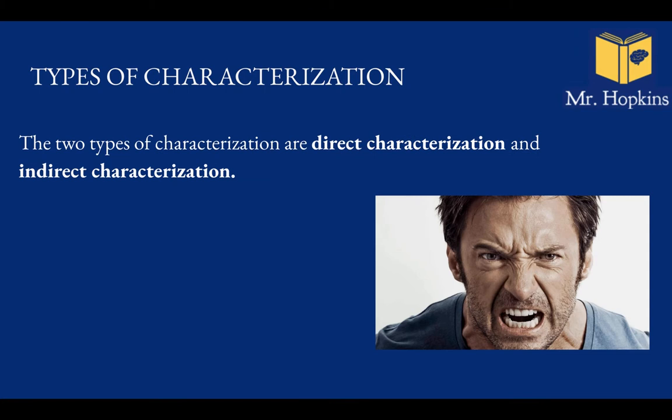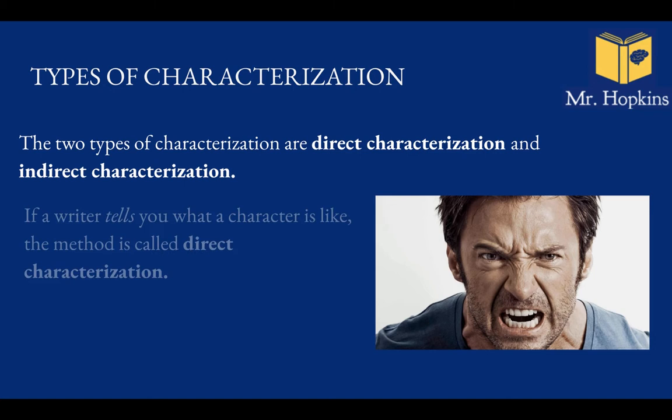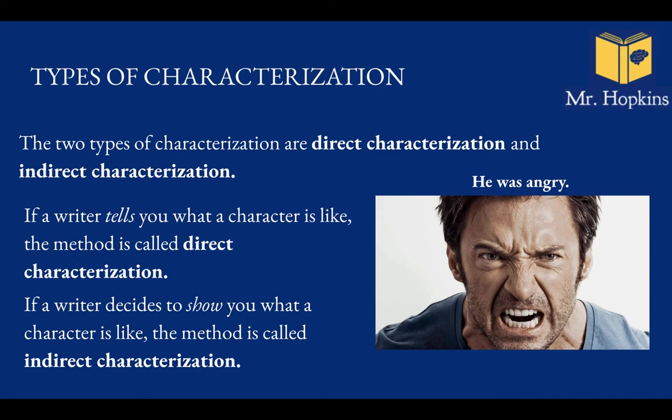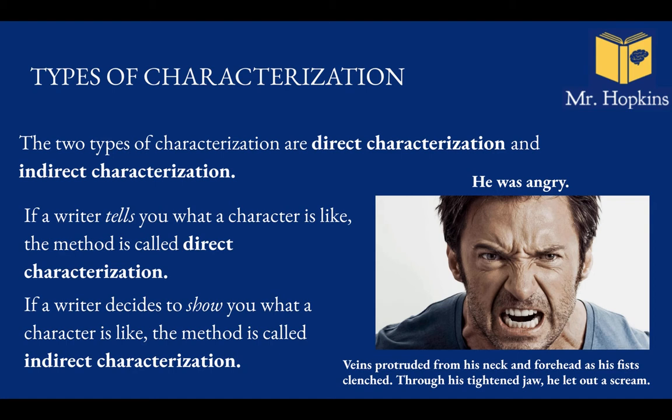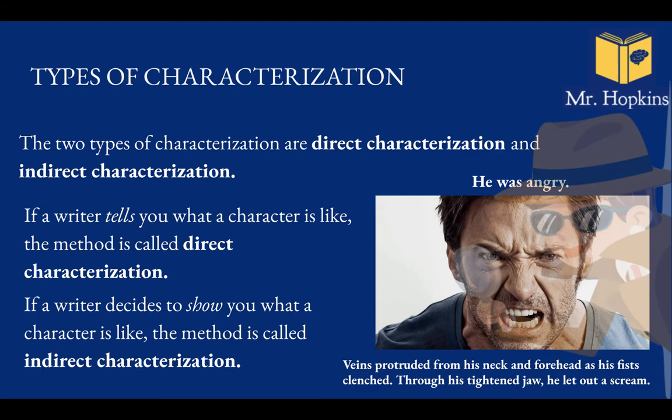There are two main types of characterisation: direct characterisation and indirect. With the former, the author tells you exactly what a character is like — it's very clear. For instance, 'he was angry.' I don't need to do any investigatory work here — I know he's angry. Indirect is where the author shows you what a character is like. For instance: 'Veins protruded from his neck and forehead as his fist clenched. Through his tightened jaw, he let out a scream.' I'd have to read that and then interpret that he's angry — it makes me do a little bit of the investigation, which is part of the fun.